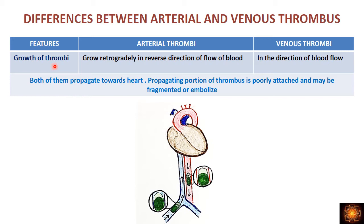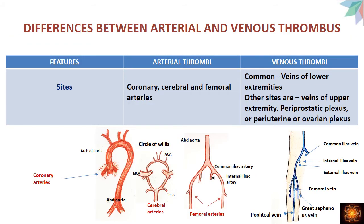Regarding growth direction: arterial thrombi grow retrogradely — in the reverse direction of blood flow. For example, in the abdominal aorta where blood flows downward, the thrombus grows in the reverse direction. Venous thrombi grow in the direction of blood flow. In both cases, growth is ultimately toward the heart. The propagating part is very friable and weakly attached, so it can detach easily and embolize.